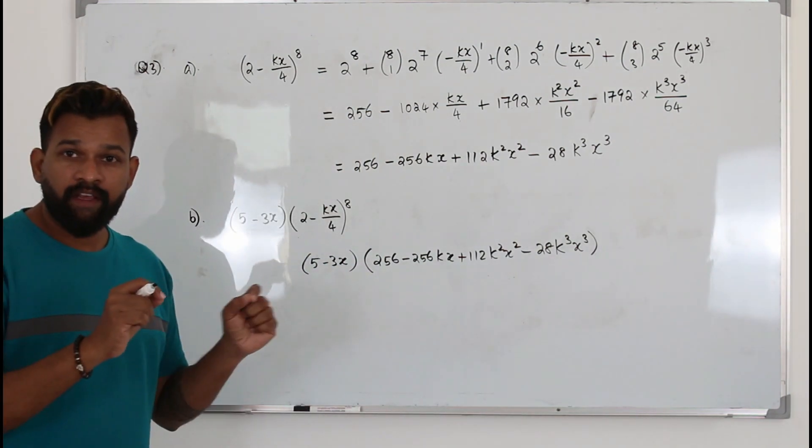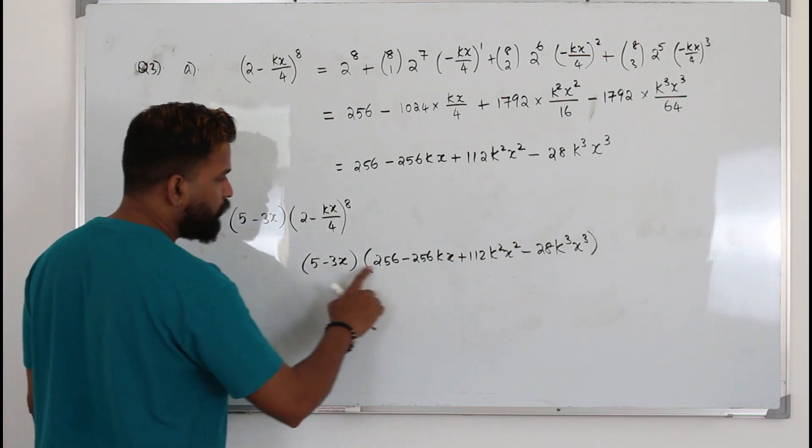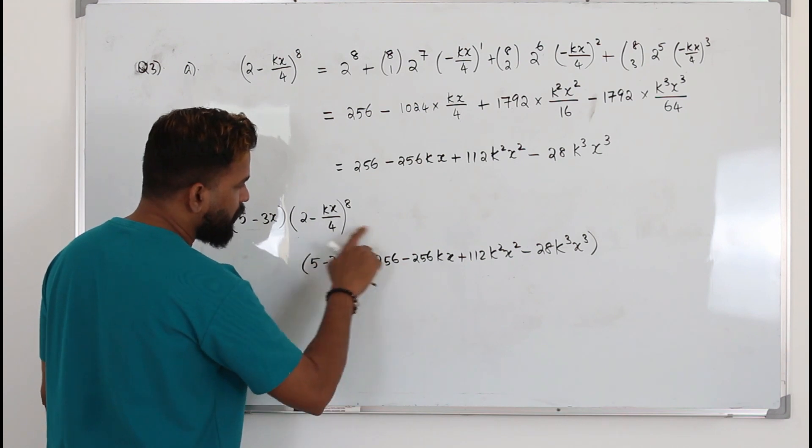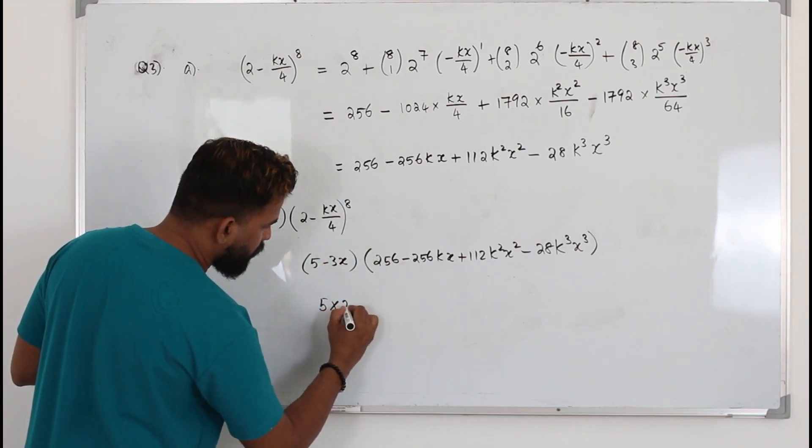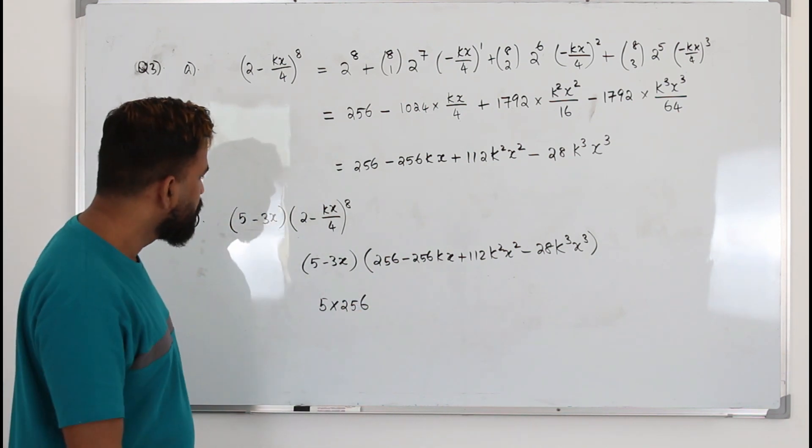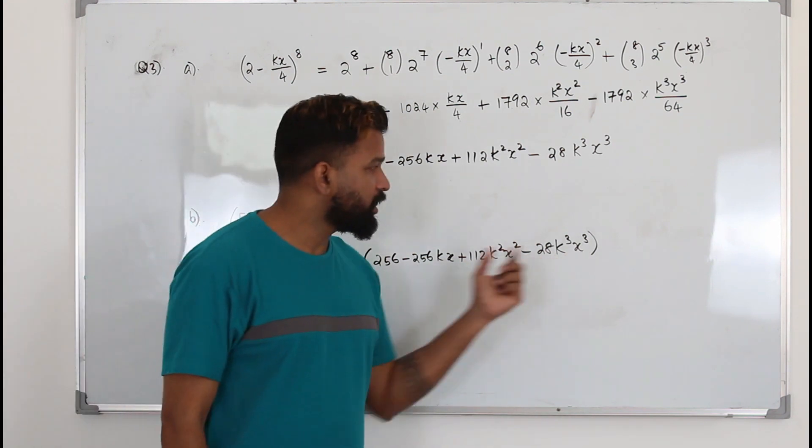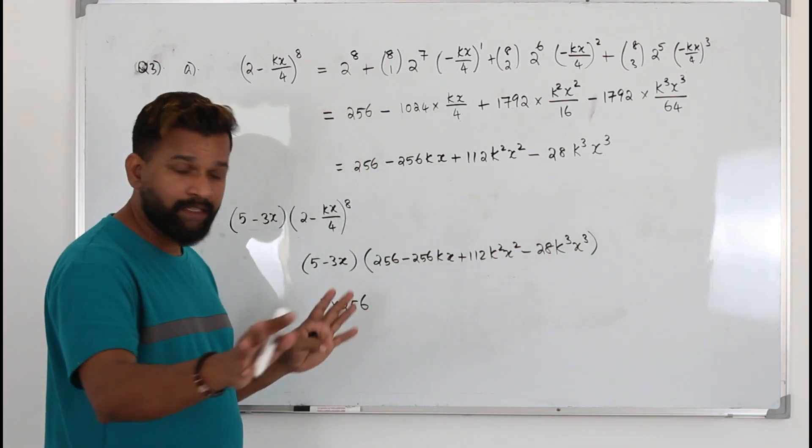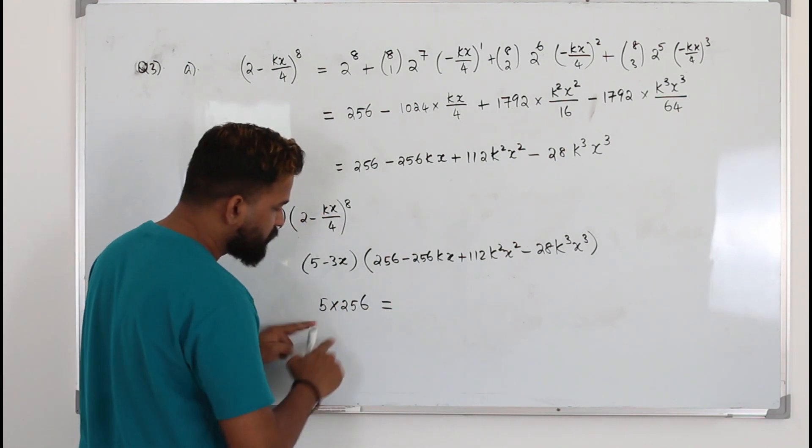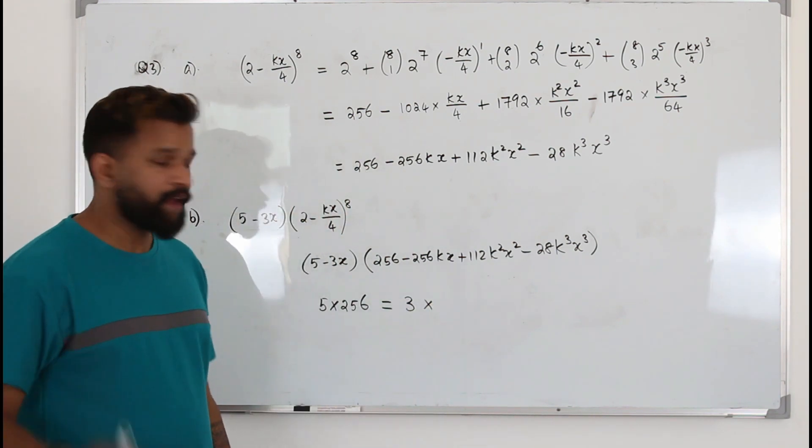Now we need to carefully find the constant term first. When you multiply 5 times everything, you will have a constant term when you multiply 5 times this. 5 times 256 will give you a constant. How about -3x? If you take -3x and multiply everything, every term will have x in it, so there is no constant. So this is the only constant term. The question says the constant term is 3 times the coefficient of x.